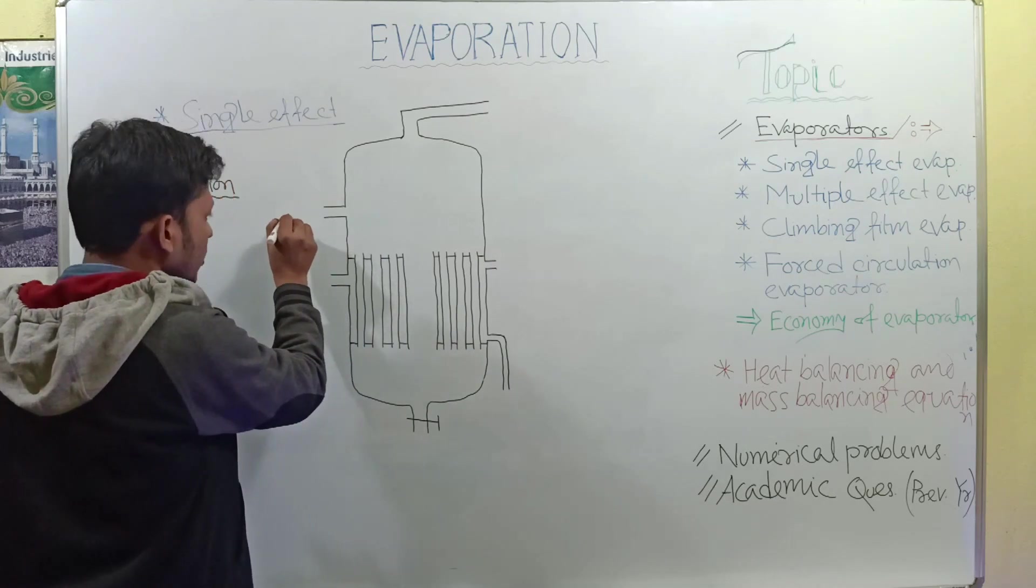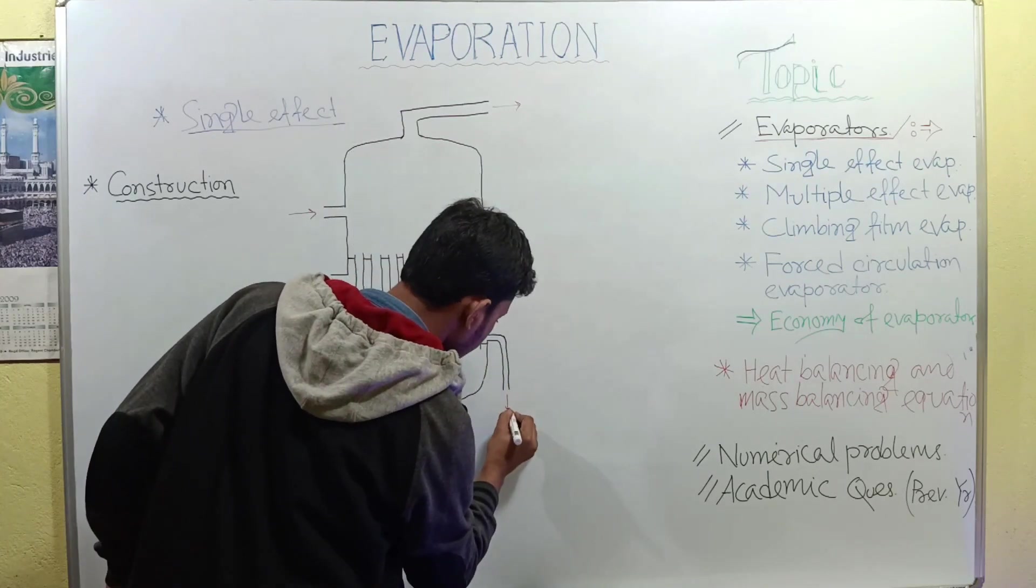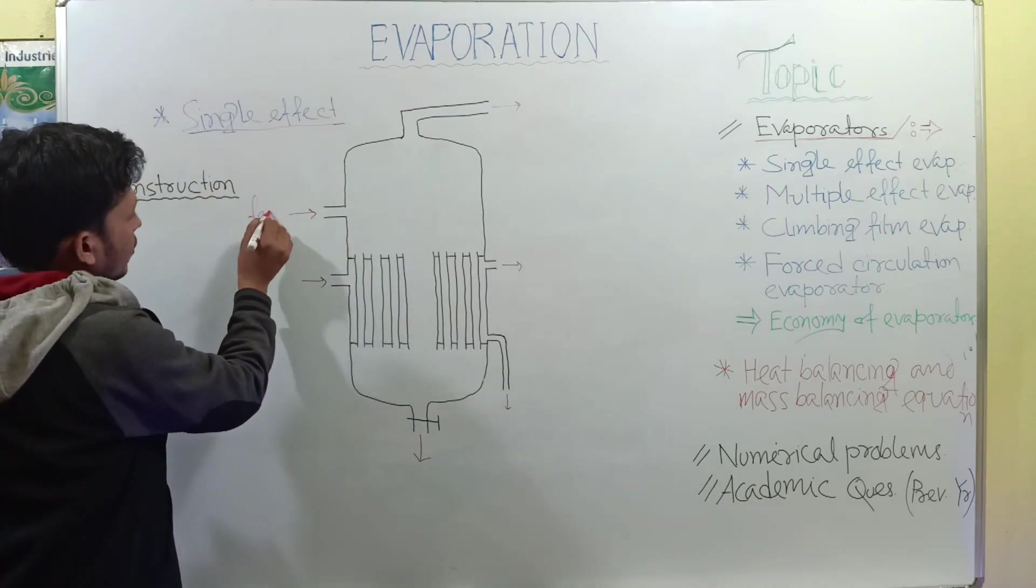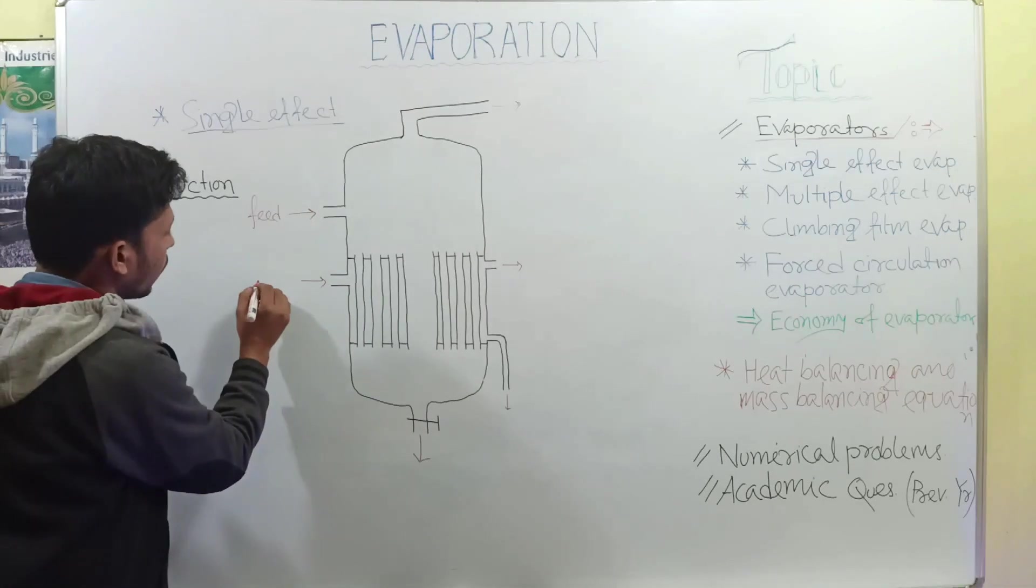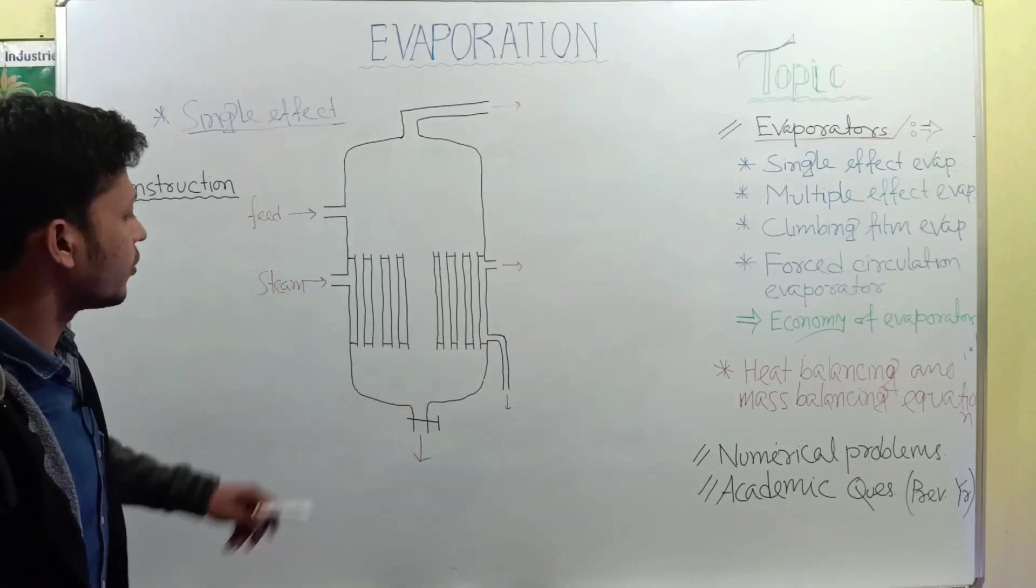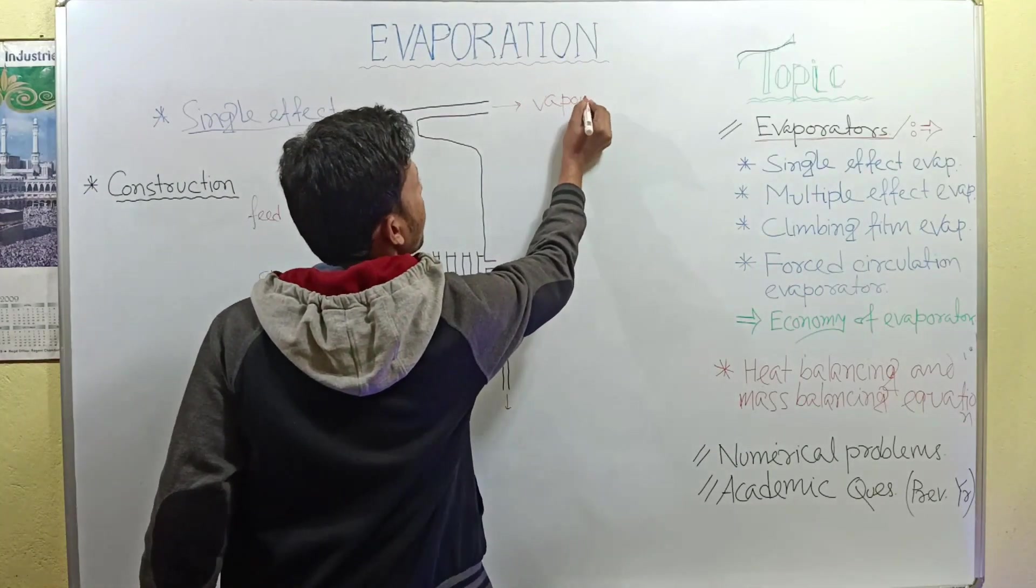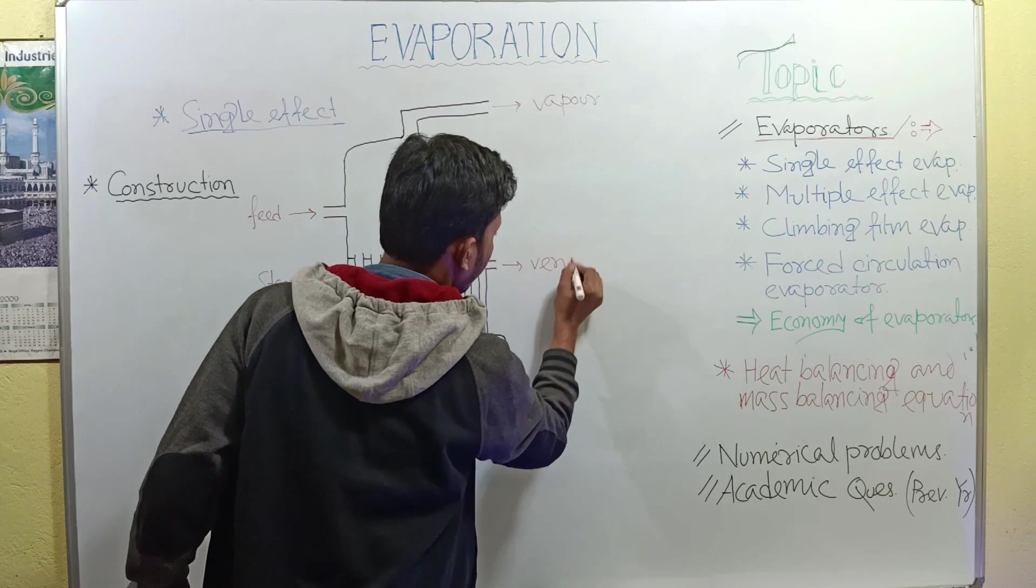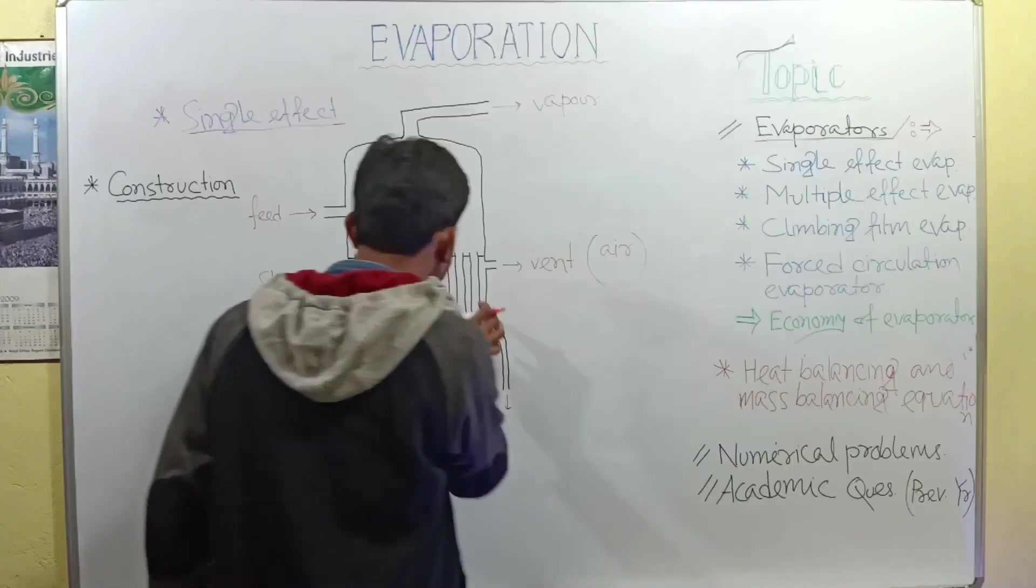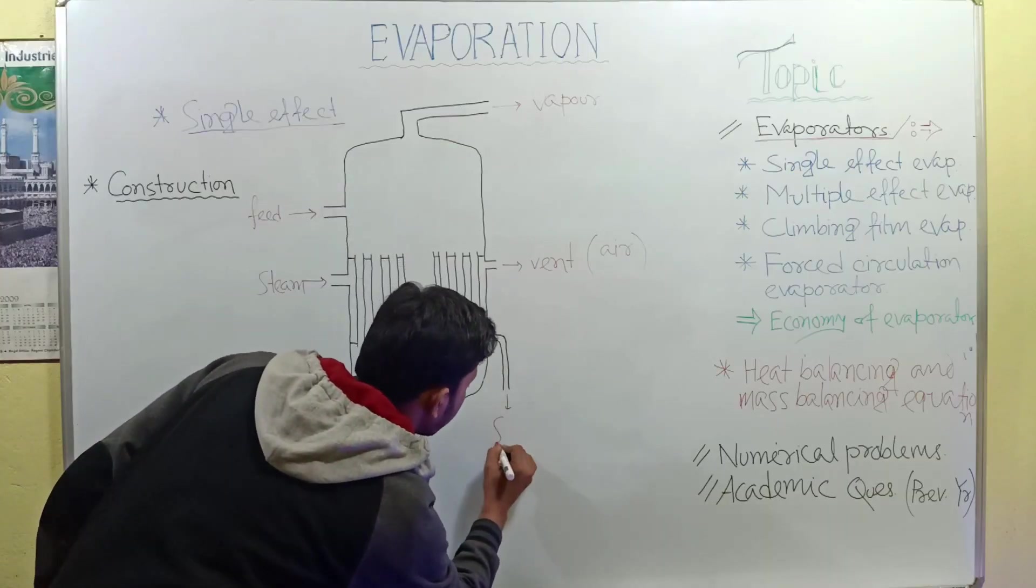You also see that there are two inlets and four outlets. First one for feed, second for steam. For outlets, this is the outlet of vapor, this is the vent which is the outlet of air present in the calendria before introducing the steam, and this is the outlet for steam condensate.